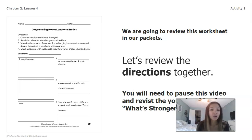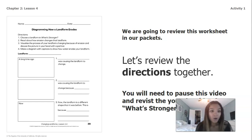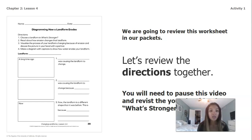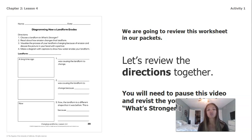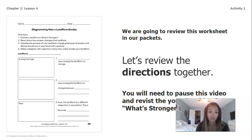So the directions are: you're going to choose a landform in What's Stronger — any of the landforms from the story. You're going to read about how erosion changes that landform. You're going to visualize the process of your landform changing because of erosion and discuss the picture in your head with a partner. That can be somebody at home, or if there's nobody at home to talk to, you can just think about the ideas in your head. And then the last part is you're going to make a diagram with captions to show how water erodes your landform.